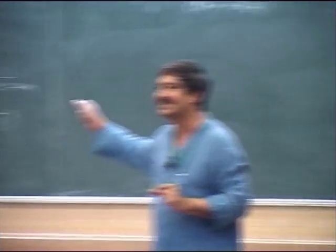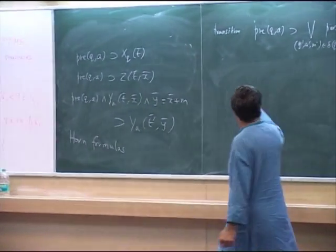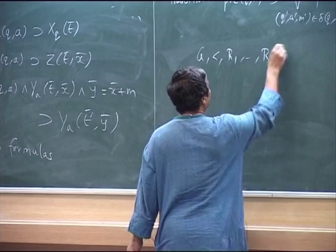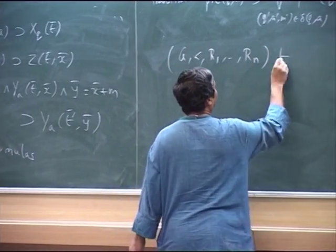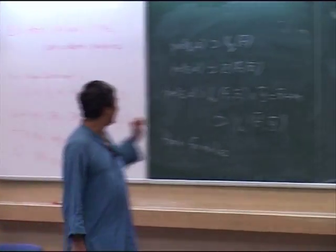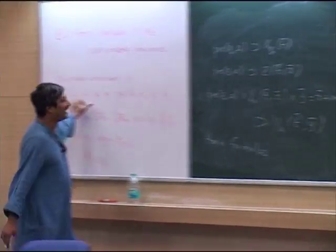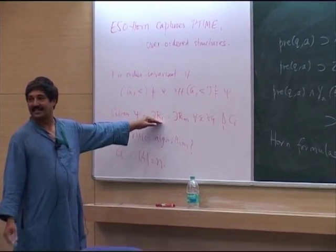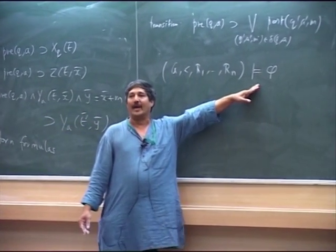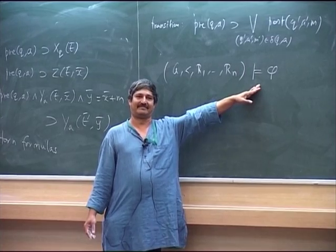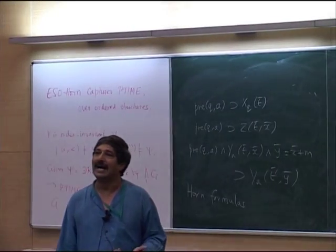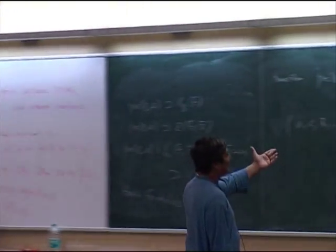I am not starting with the existential quantifiers, which means I have a first order horn sentence of this kind. A satisfies this structure if and only if there is a structure of this kind which satisfies the first order sentence over this vocabulary.